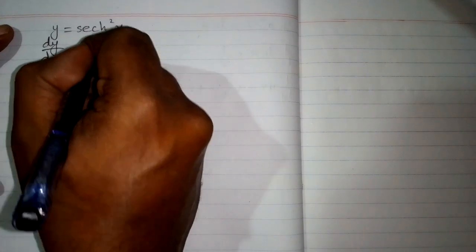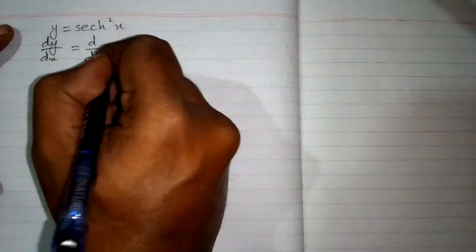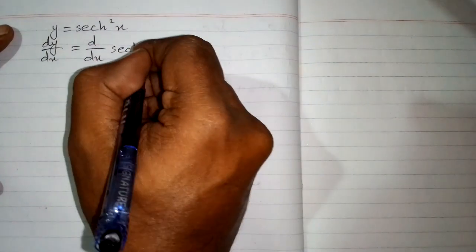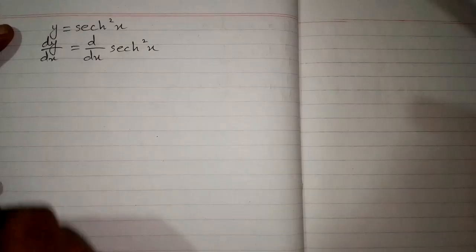In this video, we will find the derivative of hyperbolic secant squared of x. First, we will differentiate both sides with respect to x. So we have dy/dx equals d/dx of hyperbolic secant squared of x.